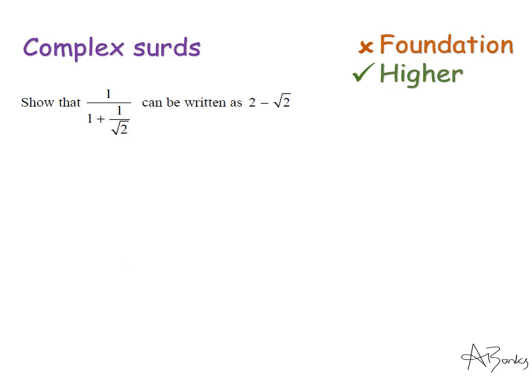Here's another example of a complex surds question. This question clearly looks like a rationalizing the denominator question, but it's much more complex because we actually have a fraction on the denominator of our fraction. So how do we get rid of the √2 on the bottom of that fraction? Well, we're going to have to times it by √2. But if we times the fraction by √2, we have to times everything by √2. So the 1 on the numerator times by √2 is just √2. The 1 on the denominator times √2 is just √2. And 1 over √2 times √2 is √2 over √2, so that's just 1. So just by multiplying every term by √2, I've got rid of the fraction on the denominator.